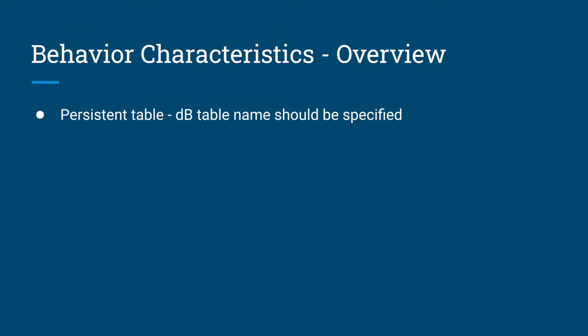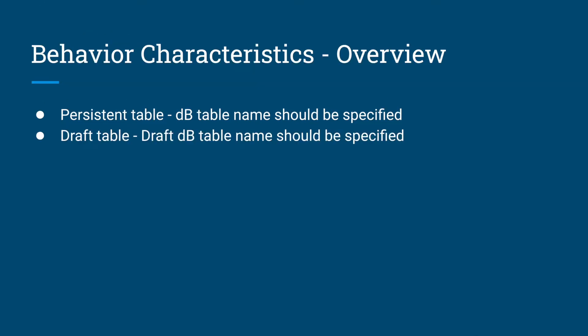The first one is the persistent table — we need to mention our database table here. We also need to mention the database table for the draft. The draft table is mandatory and will be similar to our persistent table but with additional admin fields.